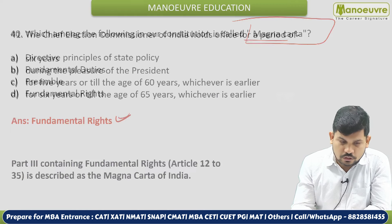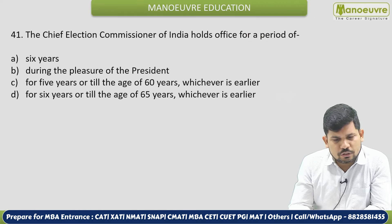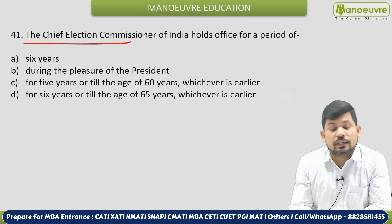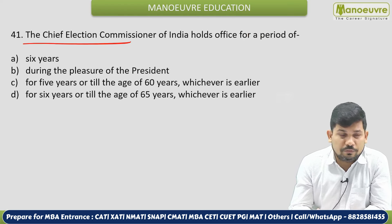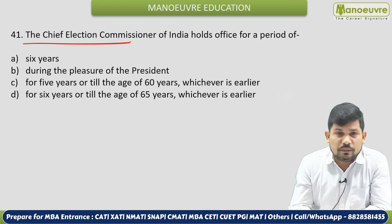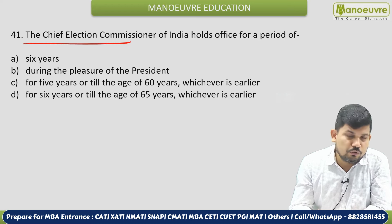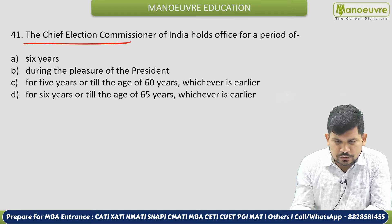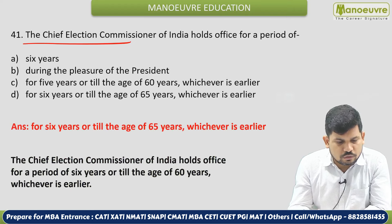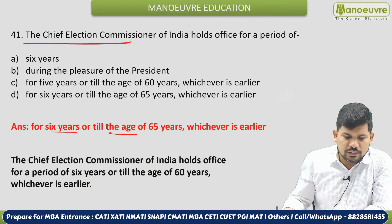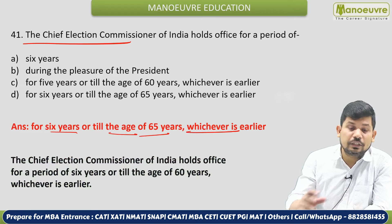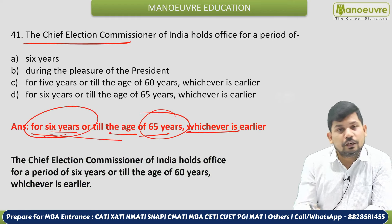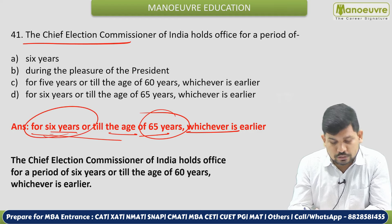Next: The Chief Election Commissioner of India holds office for a period of how long? As per current affairs, the Election Commission is in the news. The correct answer is 6 years or until the age of 65 — whichever is earlier. Remember both: 65 years and 6 years. This is an expected question.